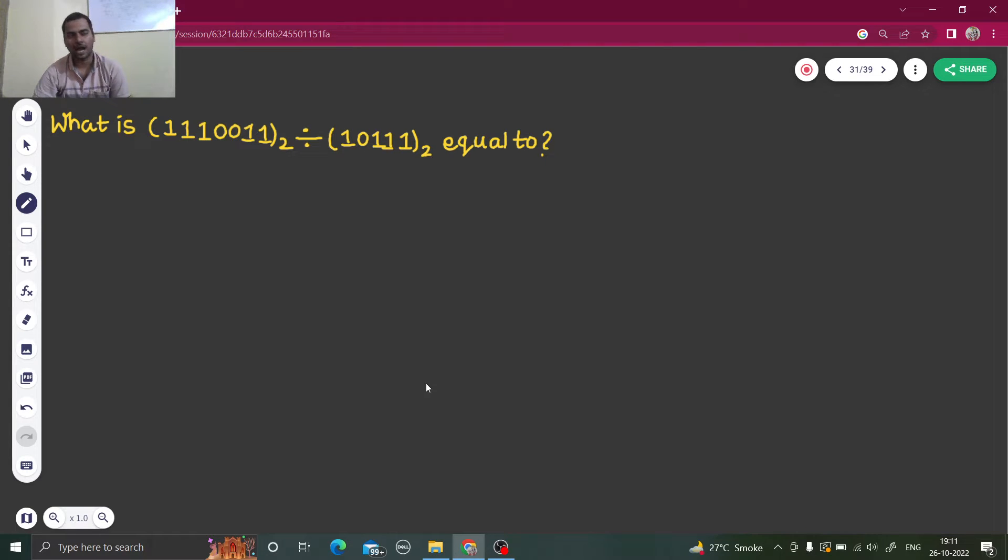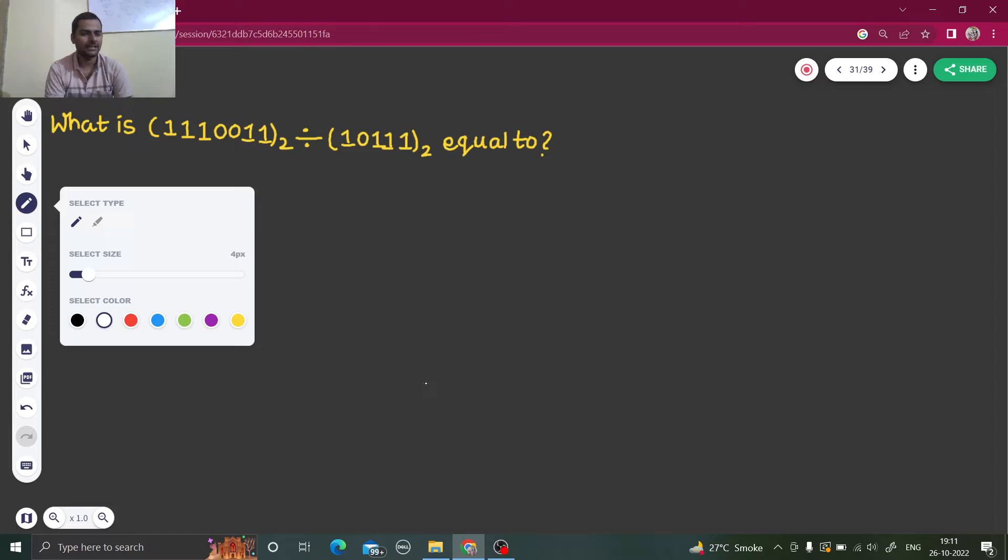The concept is how to divide two binary numbers without converting them to decimal. So how to divide a binary number with another binary number. We will also see how to convert it into decimal and then find the result. But first of all, our focus is to divide it, keeping it binary only.